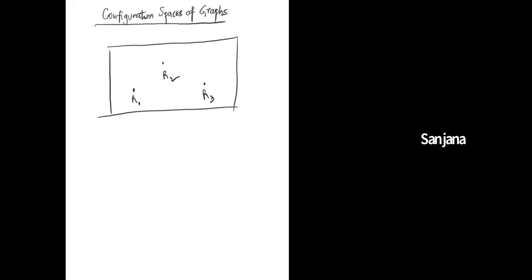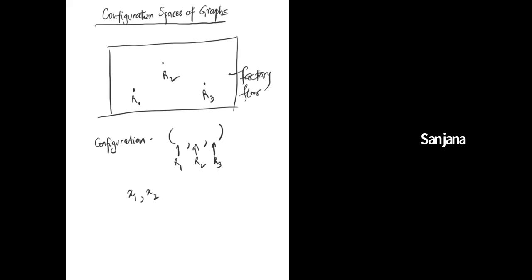So this is my factory floor. The configuration space is the ordered triple — position of R1, position of R2, and position of R3. This is going to be a three-tuple of all the points these robots can occupy in R² without colliding, which means I'm looking at all points x1, x2, x3 in R² such that no two are the same — such that x_i ≠ x_j for any i and j. If you guys need notes or any extra information, I am very happy to give you well-written sources, so feel free to ask.